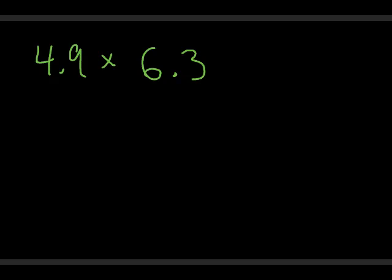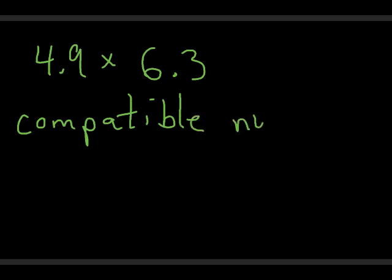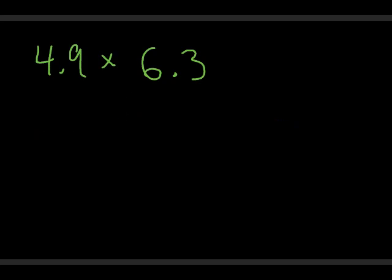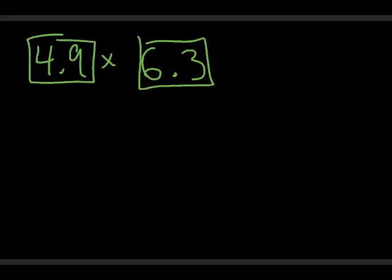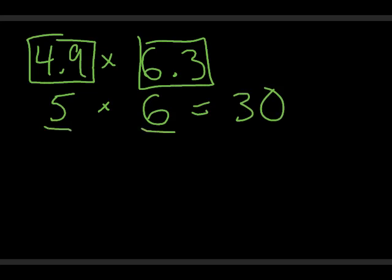Later in the chapter we'll discuss how to find the actual answer. For today with multiplying and dividing, for products and quotients, we're going to use something called compatible numbers. Really all compatible numbers are, are numbers that I believe you can do the operation with mentally. For this one, we're going to pick a number that's close to 4.9 and a number close to 6.3. So 4.9 is close to 5, and 6.3 is probably closest to 6. Now 5 times 6 is 30. In this case, 5 and 6 are compatible numbers.